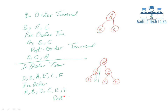Post-order traversal on Tree 2: parent A comes after all its children. B is the parent of D, so D first, then parent B. Younger brother of B is C, but C is the parent of E and F, so E, F, then parent C, then parent A. The post-order result is: D, B, E, F, C, A.